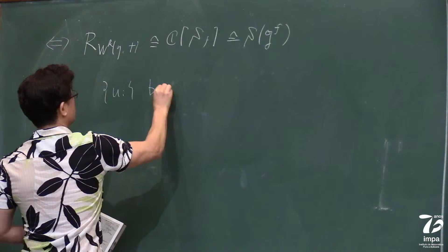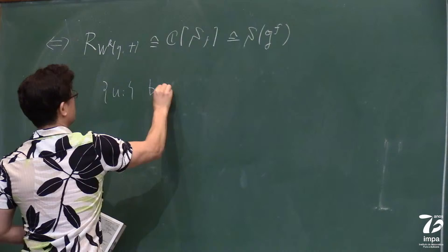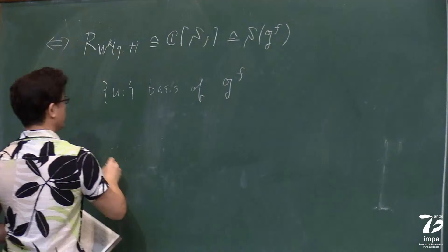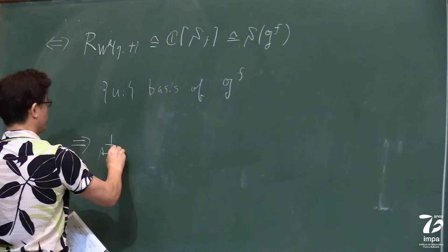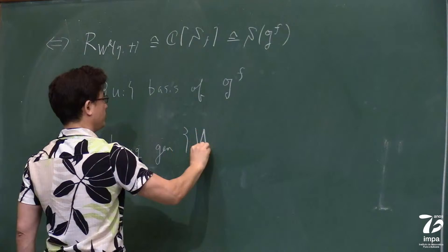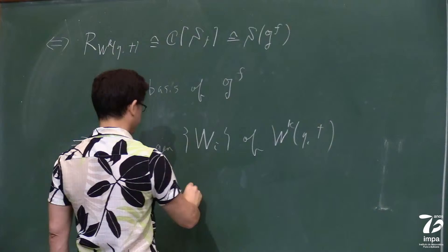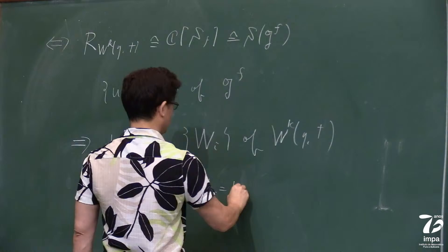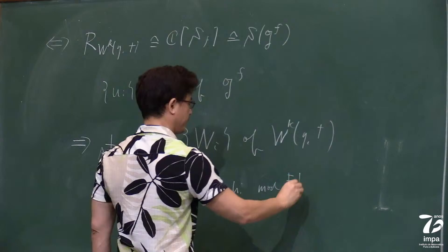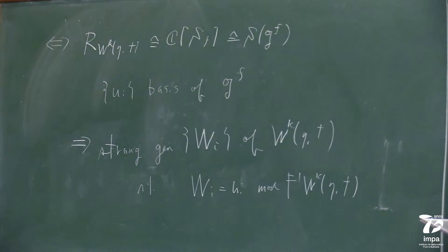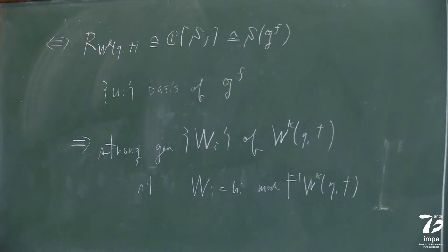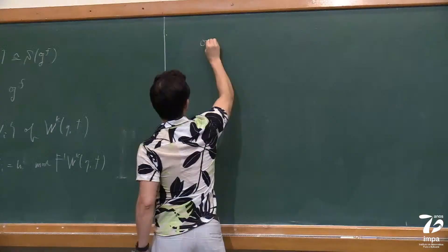If you fix a basis of the centralizer in G, then there is a strong generator W_i of W(k,G), which equals u_i mod F_{-1} of W(k,F). This describes somewhat a leading term of generators of affine W-algebras.